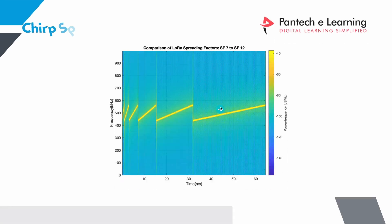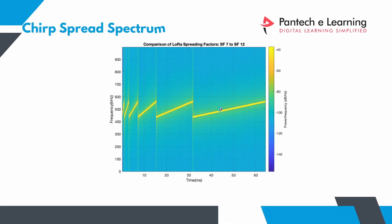You can see the chirp spread spectrum — this is the spreading factor showing how the LoRa waves are transferred.